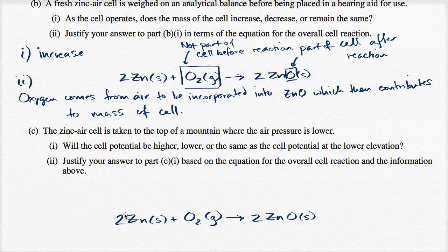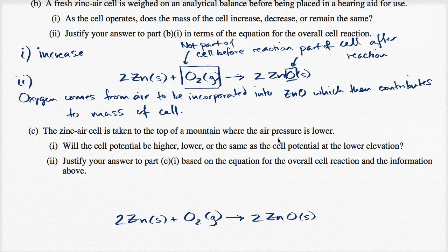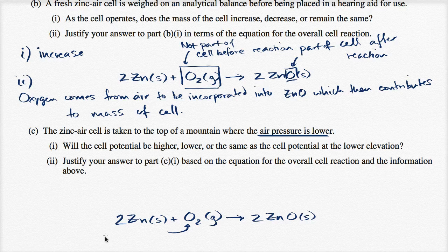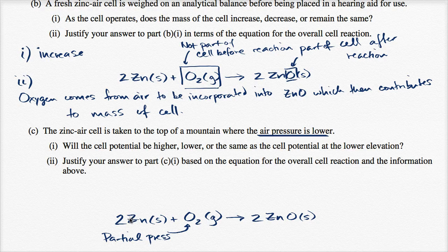And so what's going to happen if we go to the top of a mountain where the air pressure is lower, we have just fewer air molecules in general, that means we're also going to have lower oxygen molecules. So we could say that the partial pressure of oxygen is going to be lower. So we could say partial pressure of reactant will be lower.